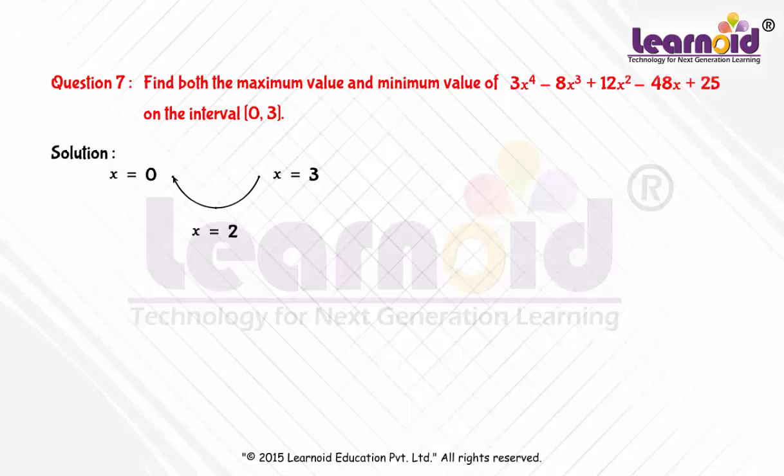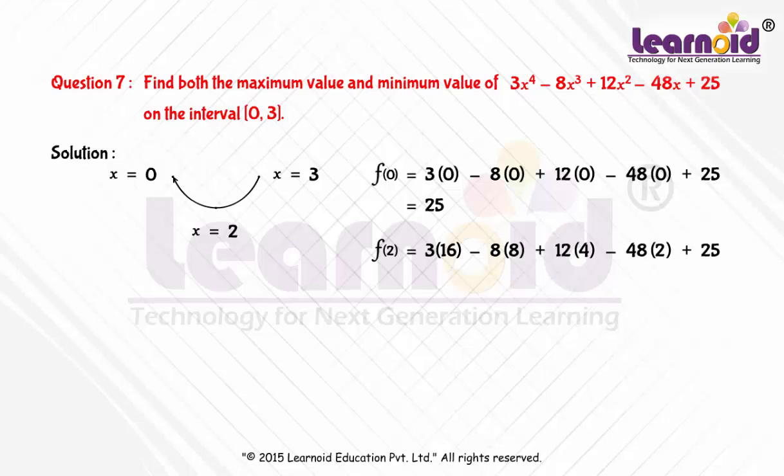At x equals 0, f(0) equals 25. Now value of f(x) at x equals 2 is, f(2) equals 3 into 16 minus 8 into 8 plus 12 into 4 minus 48 into 2 plus 25 equals minus 39.